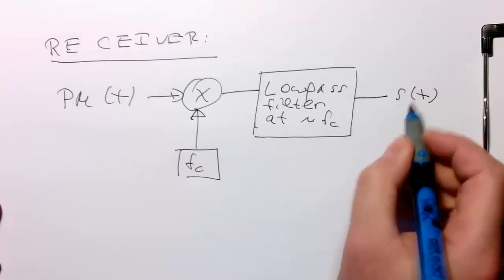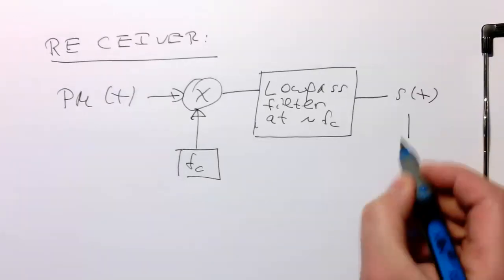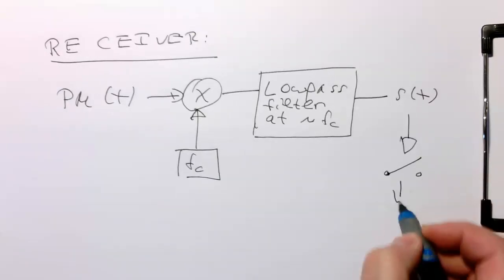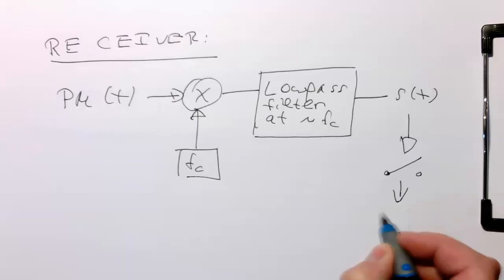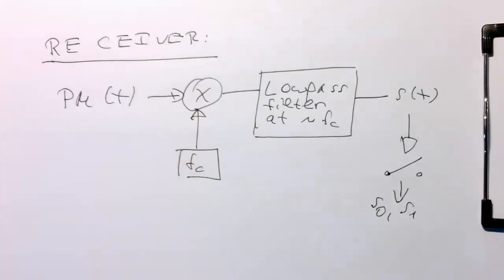Obviously this is still continuous. To make our decision, we need to sample this and decide if it's s0 or s1. With that, we have recovered our bitstream. Now we can implement this in our Octave MATLAB program and see if we can recover our pac-man.